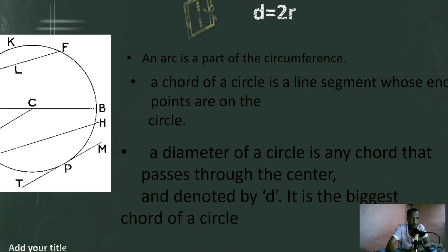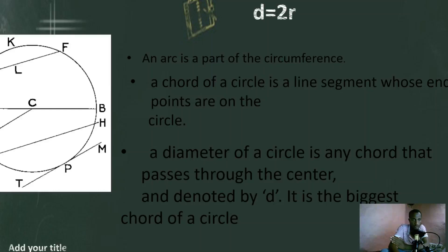And we have the diameter. The diameter of the circle — A, B is a diameter of the circle. A diameter of the circle is any chord that passes through the center, denoted by D. A, B is a diameter. The diameter is the largest chord.